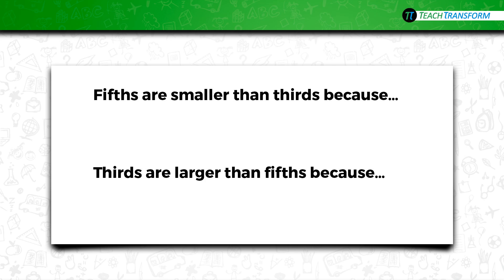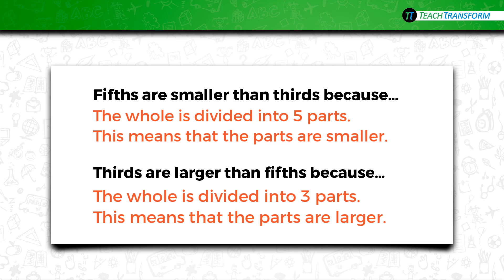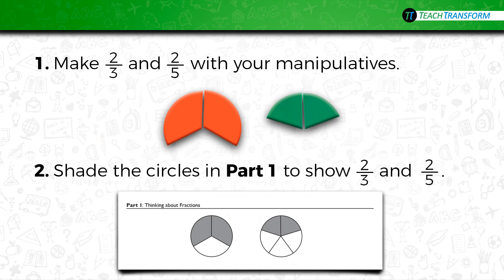Check your paper and see if you wrote something like this: fifths are smaller than thirds because the whole is divided into five parts, and that means the parts are smaller. Thirds are larger than fifths because the whole is divided into only three parts — that makes the parts larger.